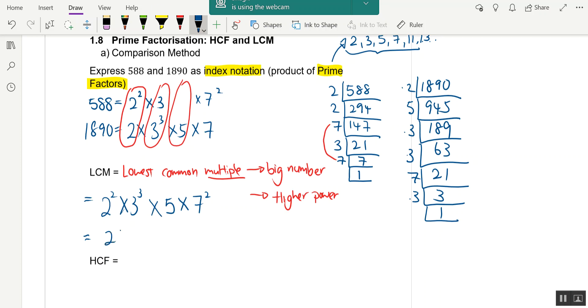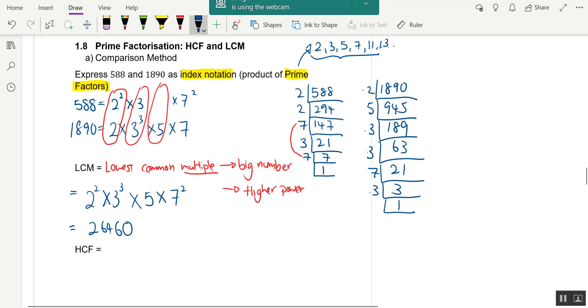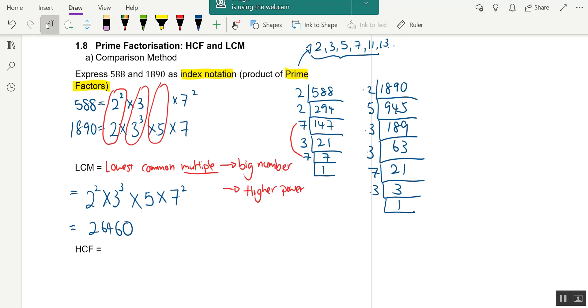To get the HCF - HCF is called the highest common factor. A factor is a smaller number of the two numbers.